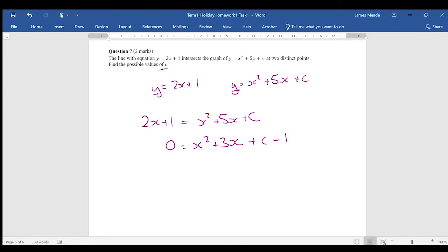Now we have a quadratic equation equal to 0 and we want to find where it has two distinct points. So we're going to use the discriminant and when the discriminant is greater than 0, that means there will be two solutions.